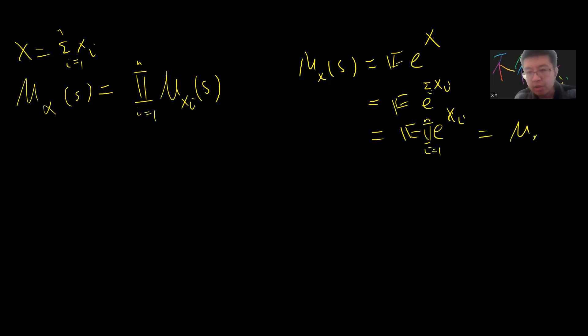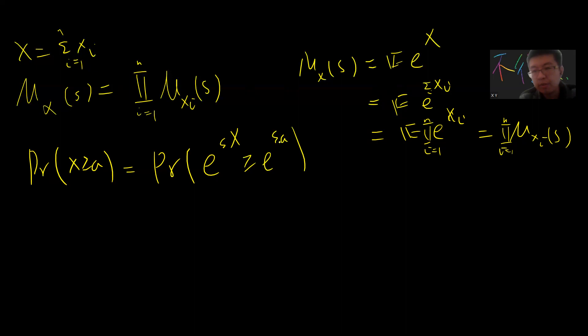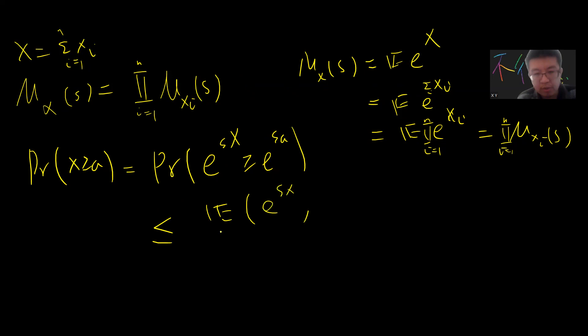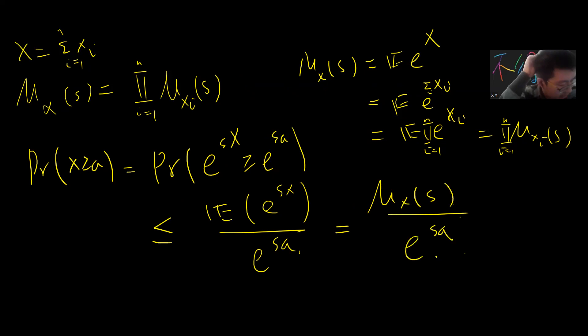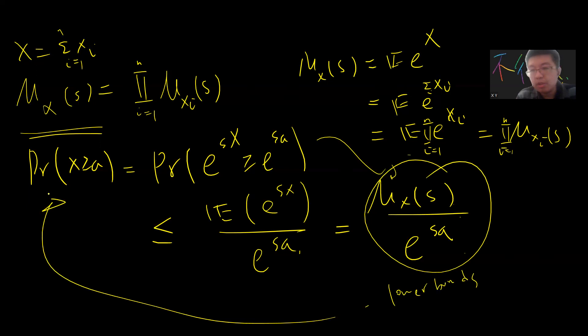Since the xi are independent, you can factor the expectation into a product. So if I want to bound the probability that X ≥ a, I can apply Markov's inequality to exp(sX) ≥ exp(sa), which gives the bound M_X(s) / exp(sa). Here s is a parameter I will optimize over. So the probability of X ≥ a is less or equal to M_X(s) / exp(sa). If you can compute this exactly, you substitute it and differentiate with respect to s to find the tightest upper bound.